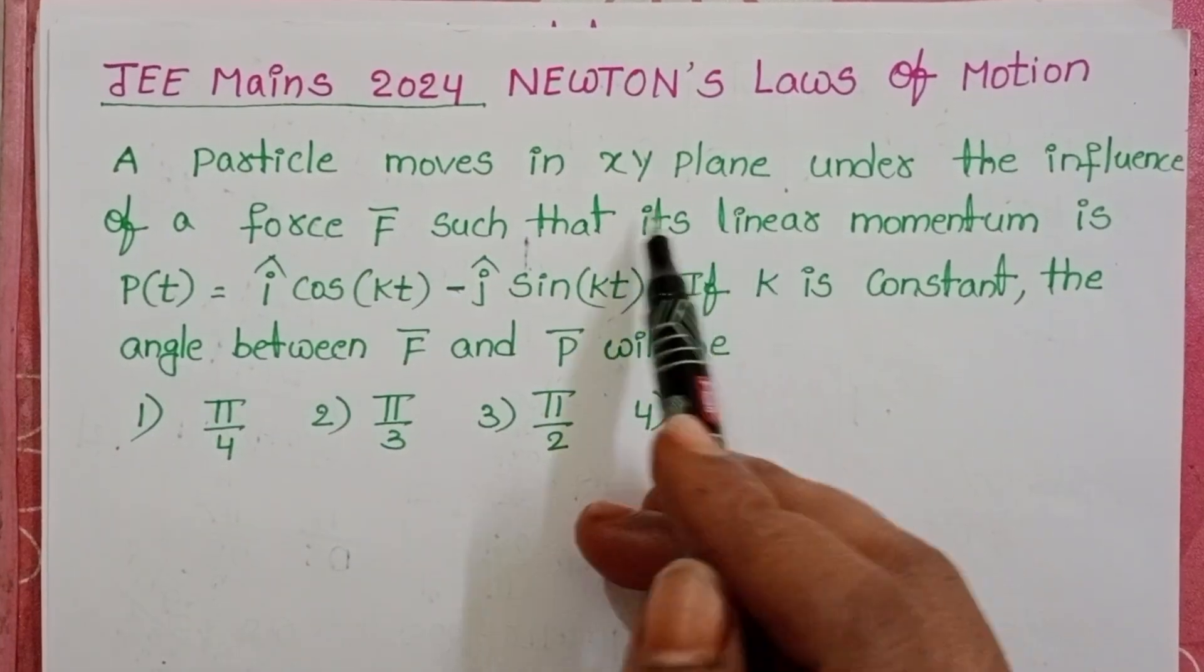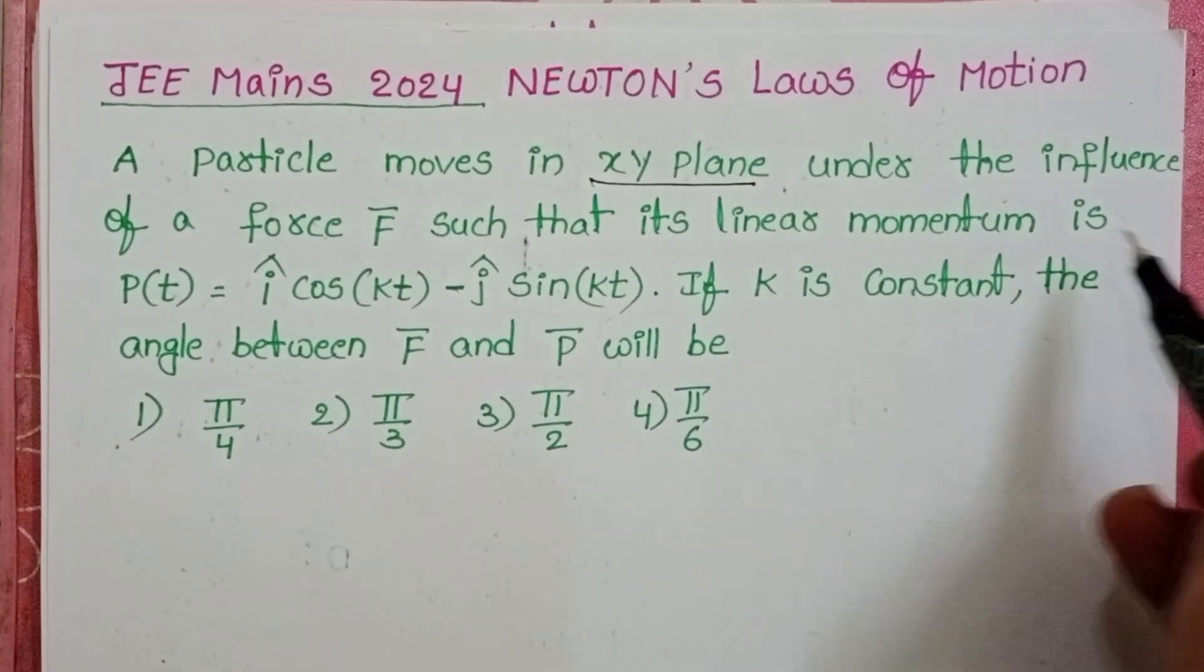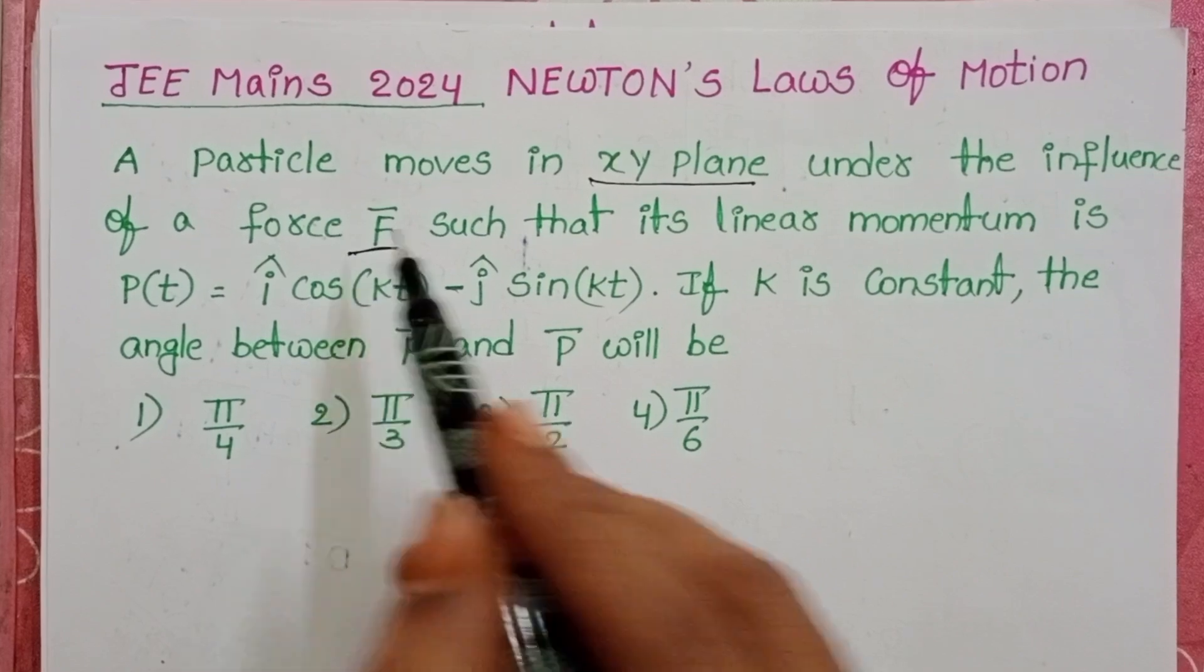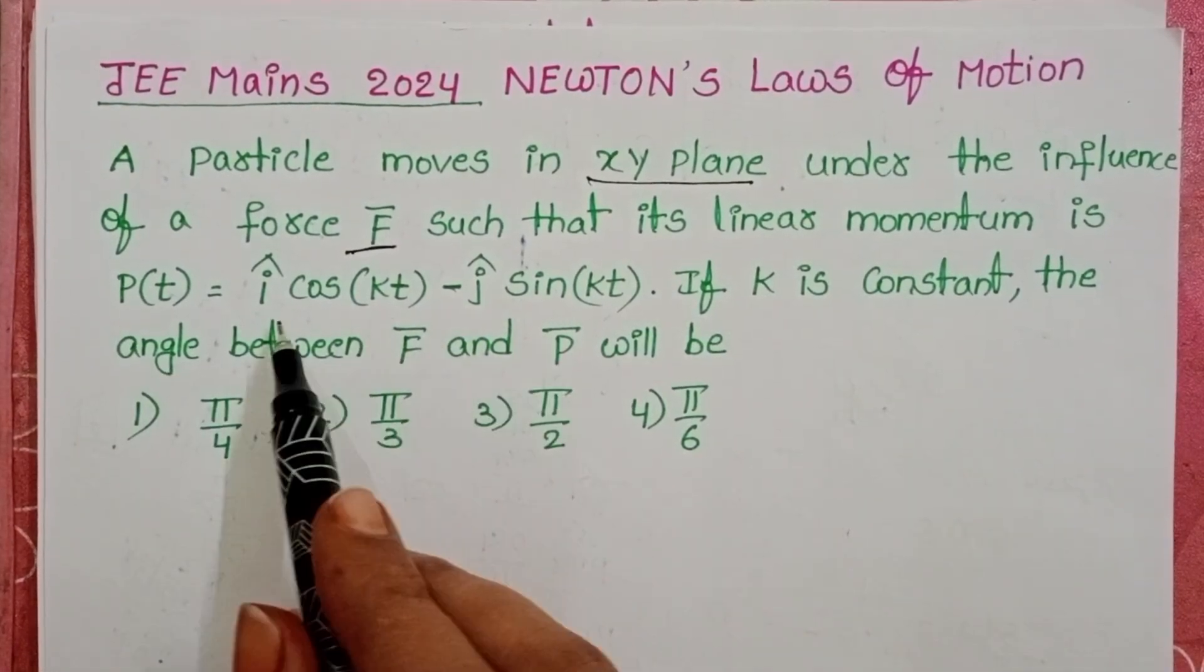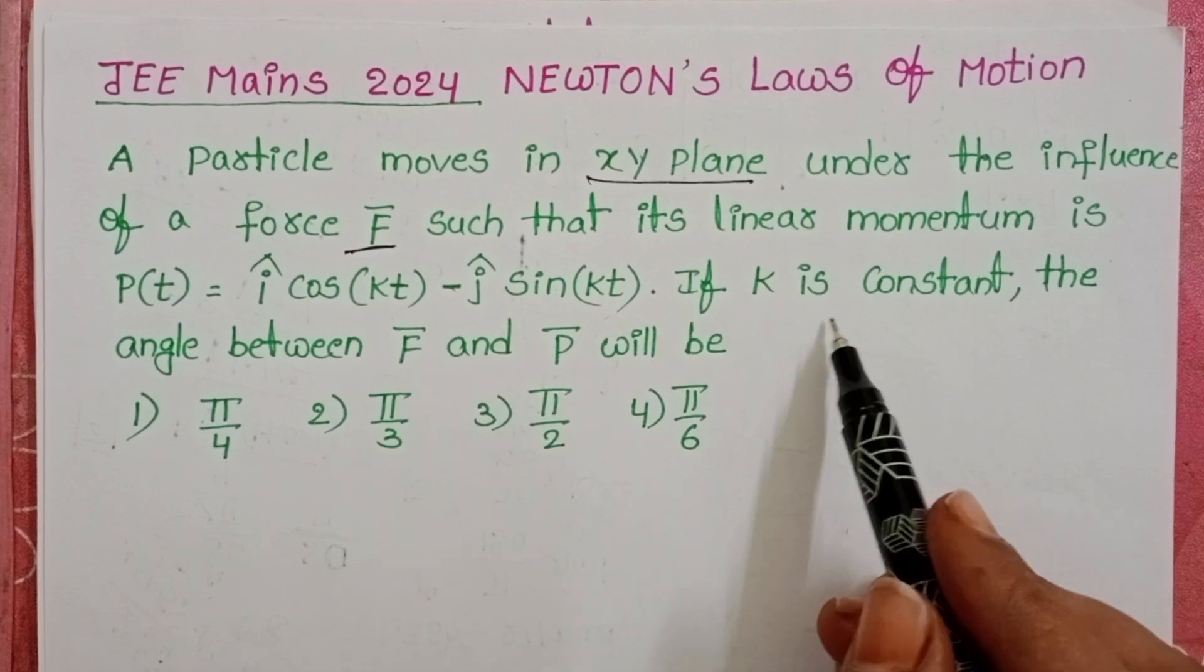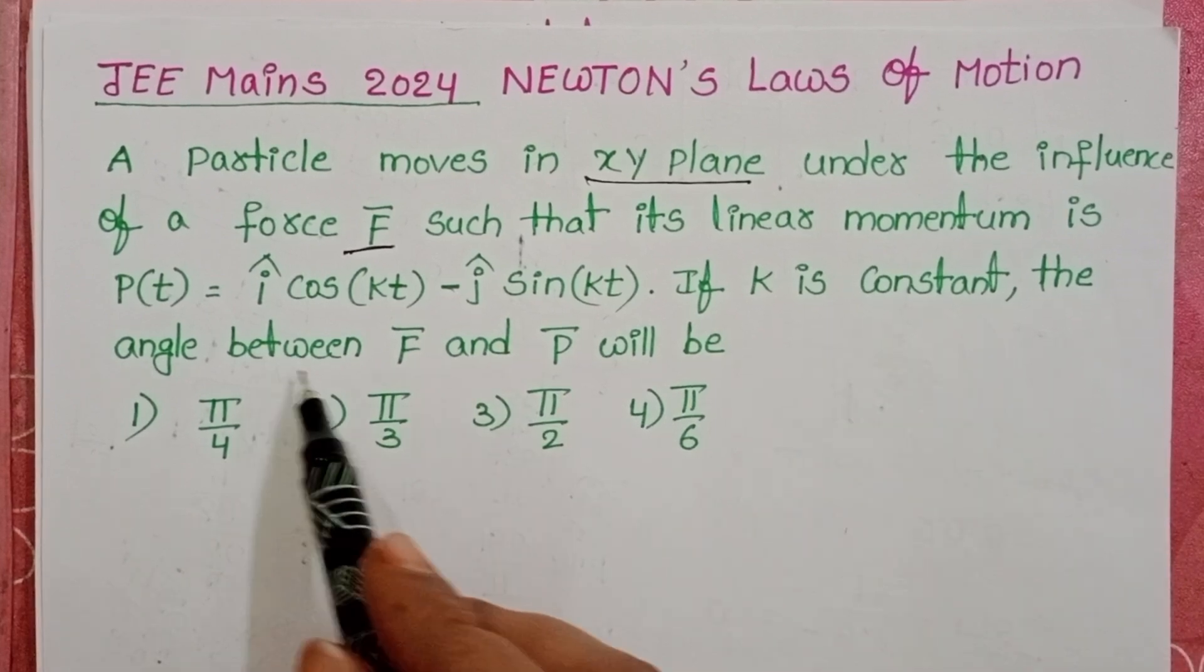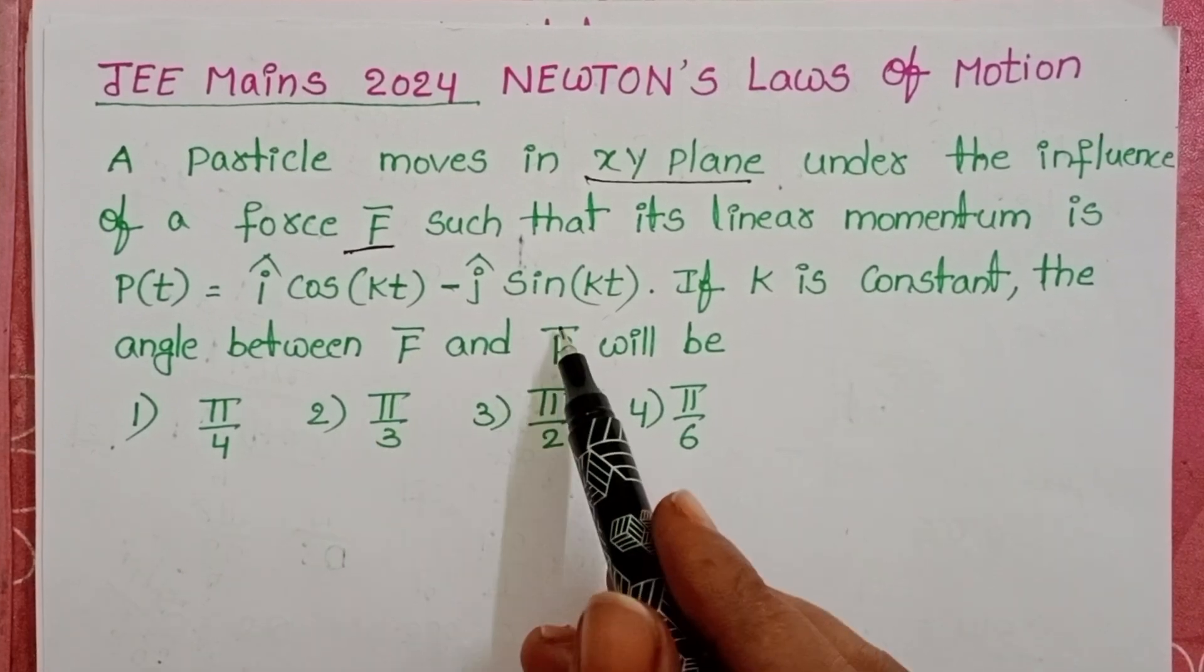A particle moves in XY plane under the influence of a force such that its linear momentum is P of T. This is the given linear momentum. K is constant, the angle between F bar and P bar.